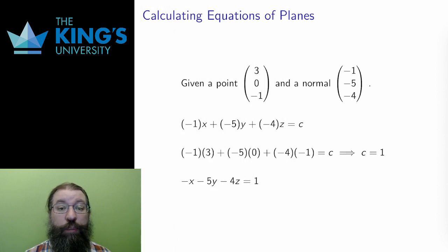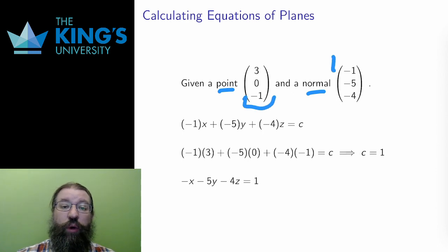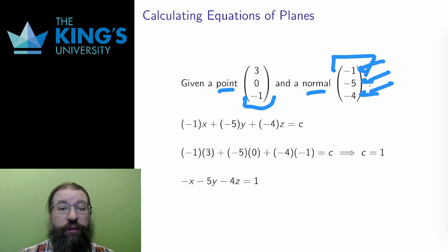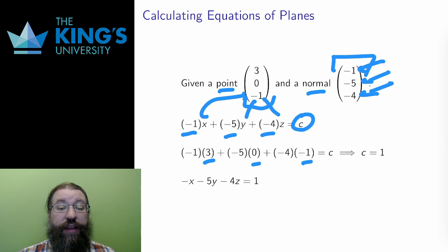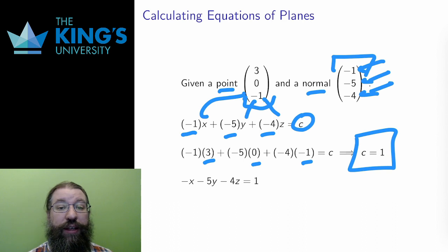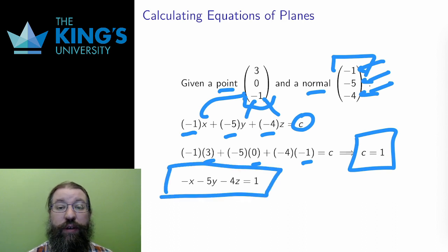All I need is a point and a normal. Here is an example with a point (0, 3, -1) and the normal (-1, -5, -4). The normal gives me the coefficients for the linear equation: negative 1 for x, negative 5 for y, and negative 4 for z. I write the equation down, and then only c is unknown. But I have a point, so I can substitute x = 0, y = 3, and z = -1 into the equation. The left side is now just numbers, and I can do the arithmetic to conclude that c equals 1. So the equation of the plane is negative x minus 5y minus 4z equals 1.